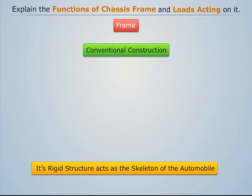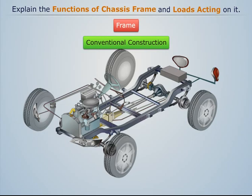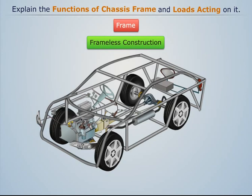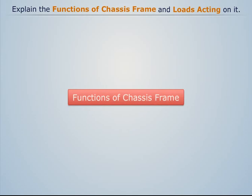The second type is frameless construction, in which no separate frame is used and all the parts are directly attached to the body. Before going into the detail of frame construction, let's understand the functions of a chassis frame.